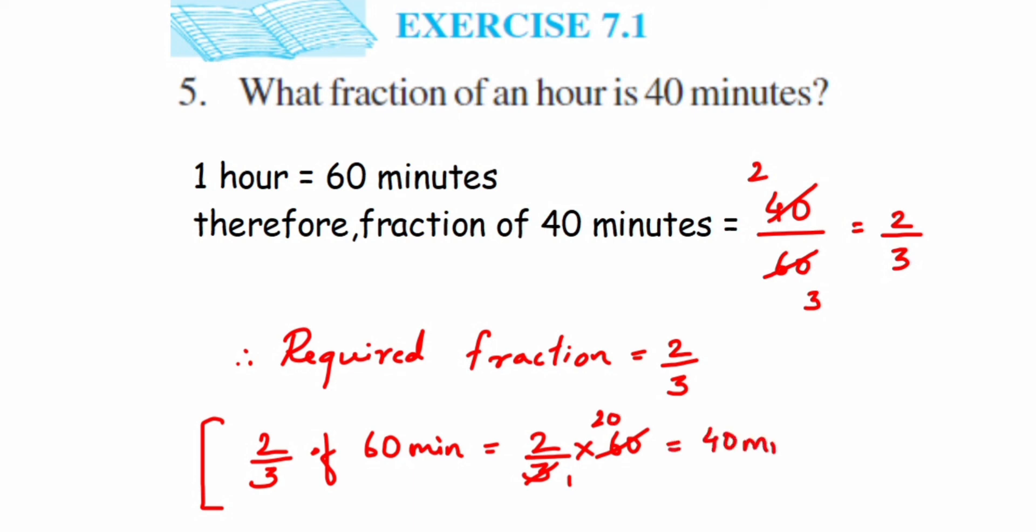That is 2 upon 3 of—which means multiplication—60. Cancel 3 and 60: 3 ones and 3 twenties are 20, which equals 2 into 20 equals 40 minutes. So the fraction 2 upon 3 is the correct answer. I hope it's clear. In case you have any questions or doubts, you can drop a comment below. Thank you so much for watching.